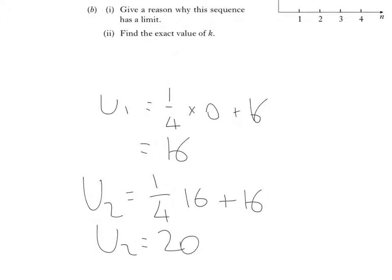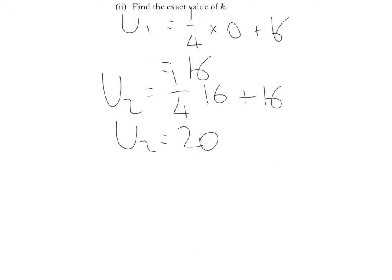And then for U_3, just repeat the process, and it will be U_3 equals 1 quarter of 20 plus 16. 1 quarter of 20 is 5. 5 plus 16 is 21.